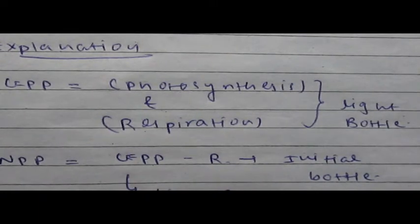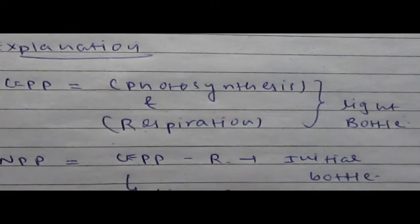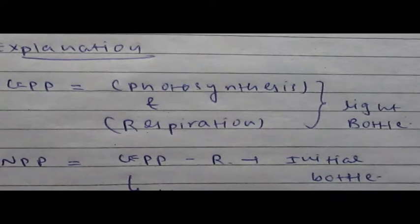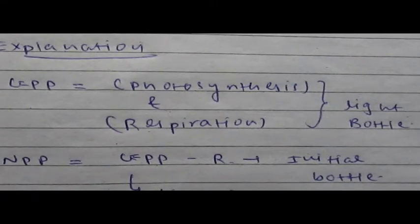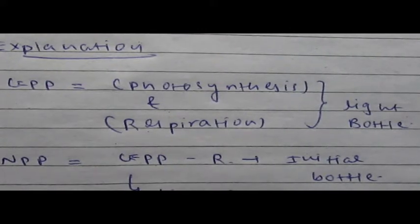Based on literature survey, gross primary production, GPP, is due to photosynthesis and respiration. Photosynthesis and photorespiration both processes occur in light bottle because light bottle is in direct contact with sunlight.